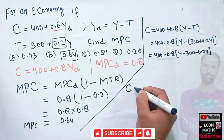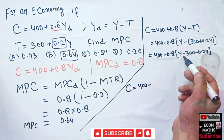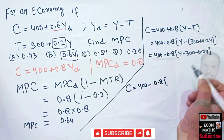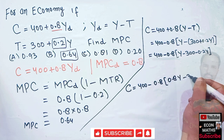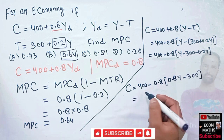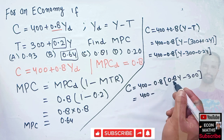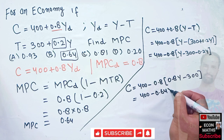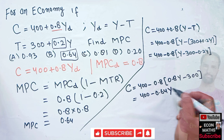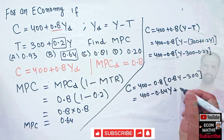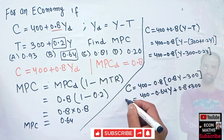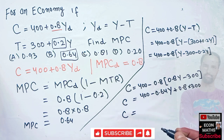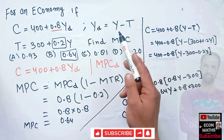We have 400 plus 0.8 times (Y minus 300 minus 0.2 Y). Expanding: 0.8 Y minus 0.8 times 0.2 Y gives 0.64 Y. So our consumption function looks like 400 plus 0.8 of 300, and the coefficient on Y becomes 0.64.